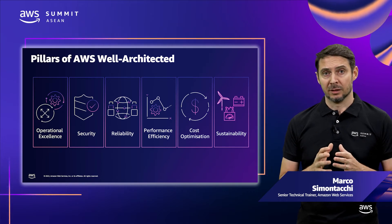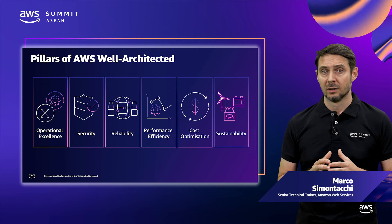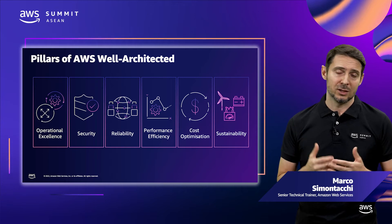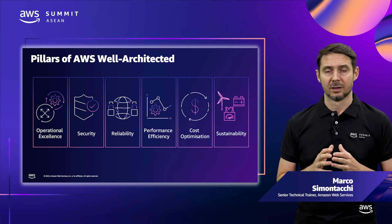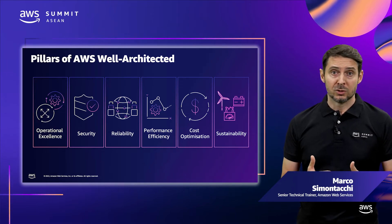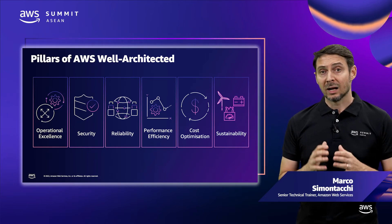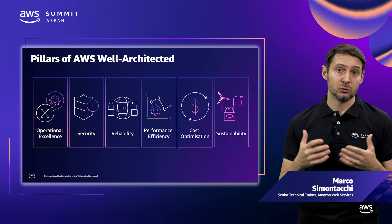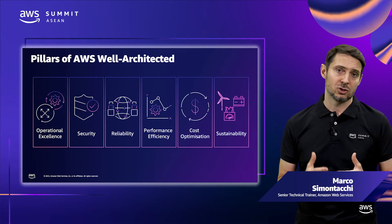The Operational Excellence pillar focuses on running and monitoring systems and continually improving processes and procedures. Key topics include automating changes, responding to events, and defining standards to manage daily operations. The Security pillar focuses on protecting information and systems. Key topics include confidentiality, integrity of data, managing user permissions, and establishing controls to detect security events. The Reliability pillar focuses on workloads performing their intended functions and how to recover quickly from failure to meet demands. Key topics include distributed system design, recovery planning, and adapting to changing requirements.